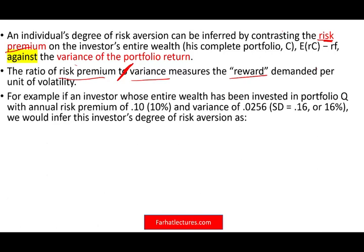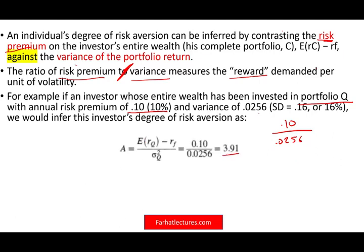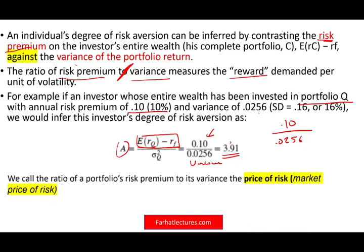For example, if an investor's entire wealth has been invested in portfolio Q with an annual risk premium of 10% — that's the numerator — and a variance of 0.0256 (standard deviation of 16%), the risk aversion A equals 3.91, which is the risk premium divided by the variance. We call this ratio — risk premium to its variance — the price of risk, or market price of risk.